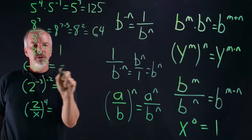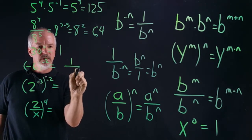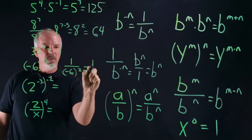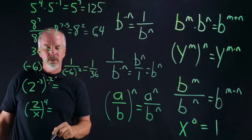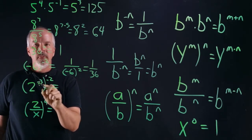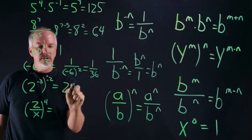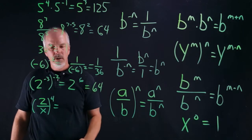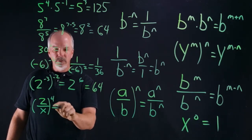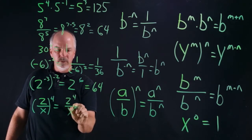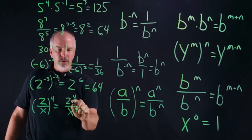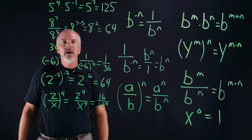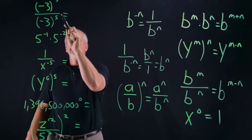Negative six to the negative two — first we put a one over that, keep our negative six, the negative two becomes a positive two, so it's one over thirty-six. Two to the negative three to the power of negative two — we multiply negative three times negative two to get two to the sixth power, which equals sixty-four. Two over x to the fourth — this becomes two to the fourth over x to the fourth. Two to the fourth is two, four, eight, sixteen — so sixteen over x to the fourth.